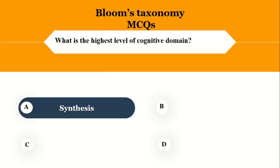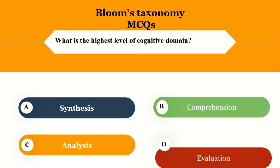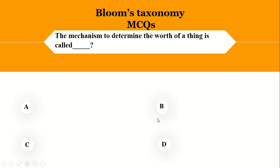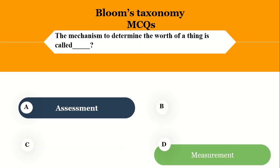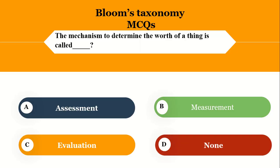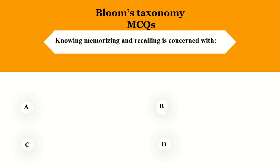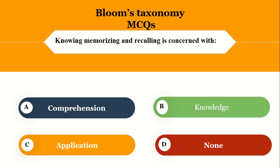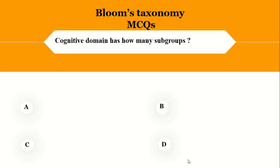What is the highest level of the cognitive domain? The right option is evaluation. Knowing, memorizing, and recalling is concerned with which level — comprehension, knowledge, application? The right option is knowledge.